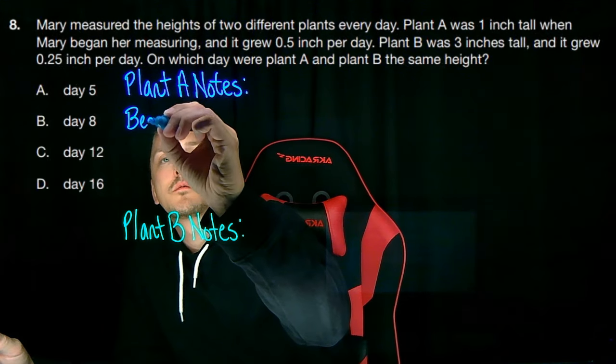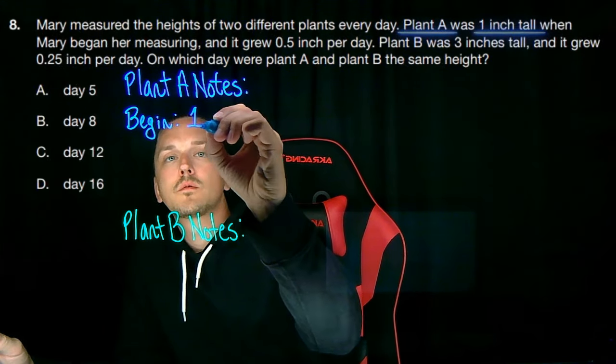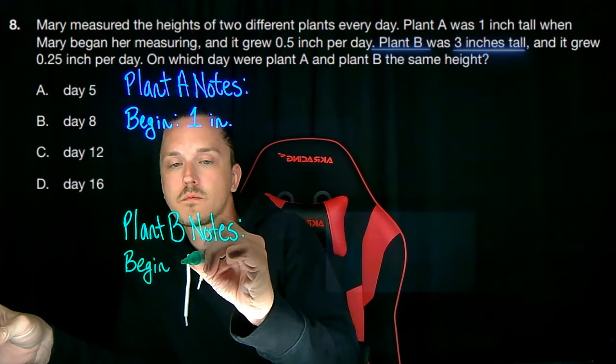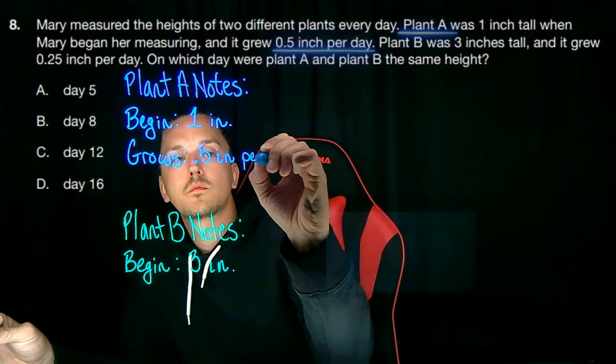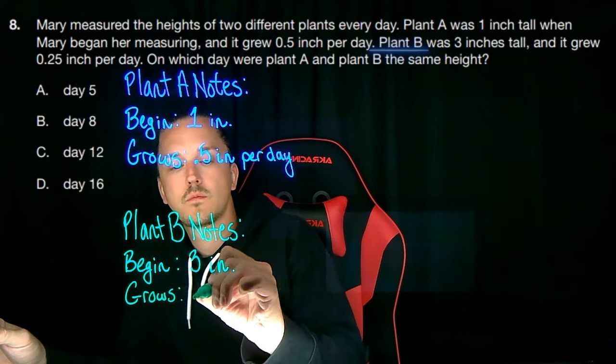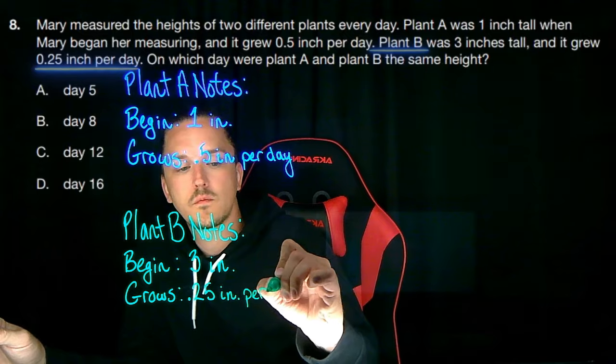Now we're talking. We'll write down that plant A began at one inch tall, and plant B began at three inches tall. And we'll also write that plant A grew by 0.5 per day, and plant B grew by 0.25 per day.